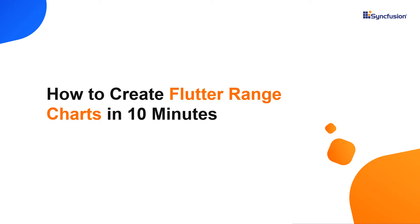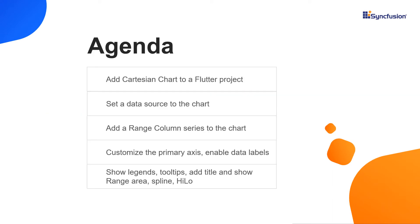Hi everyone. Welcome to this video on getting started with the Syncfusion Flutter range charts. In this video, you will see how to add the Syncfusion Flutter charts package to a Flutter project and add the Cartesian chart widget to it. You will learn how to set a data source to the chart and how to add a range column series. Then I will explain how to customize the primary axis, enable data labels, show legends, enable tooltips, and add a title in the range column series chart. Finally, I will show you how the other range chart series like range area, spline range area, and high-low work.